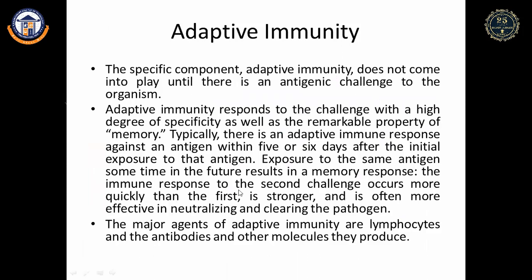Adaptive immunity is a specific immunity. Unlike innate immunity, which is non-specific, adaptive immunity is highly specific against antigens. It does not come into play until there is an antigenic challenge. A major advantage is immunologic memory — once an antigen enters the body, it is remembered, and during second exposure the reaction is much stronger. The major agents of adaptive immunity are lymphocytes: B lymphocytes and T lymphocytes.